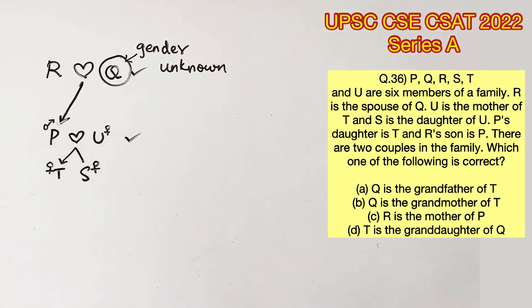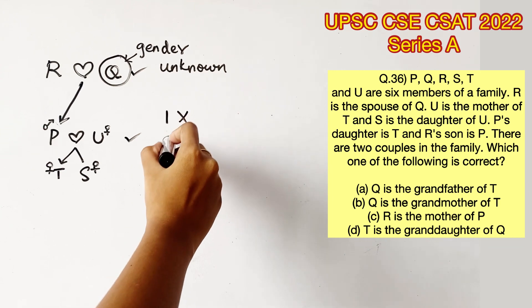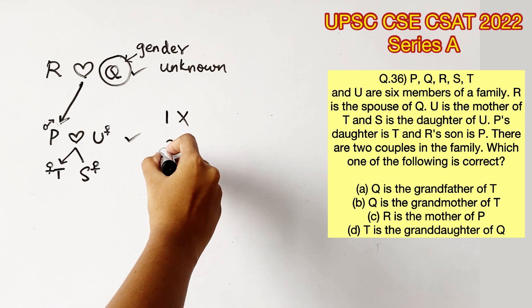Option A says Q is the grandfather of T. We don't know if Q is the grandfather or grandmother of T. So A is wrong. Then B says Q is the grandmother of T. It's wrong as well.